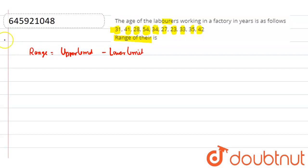So in this question, the upper limit is equal to the highest number, which is 54. And the lower limit is equal to 23.